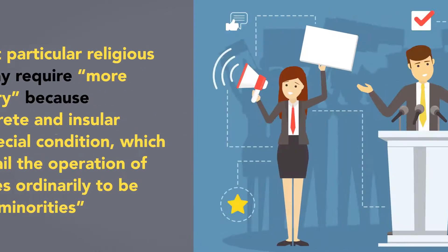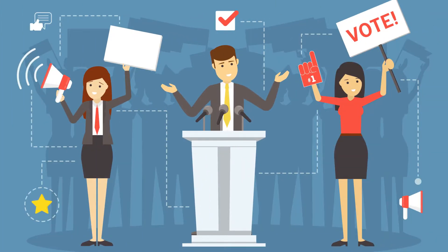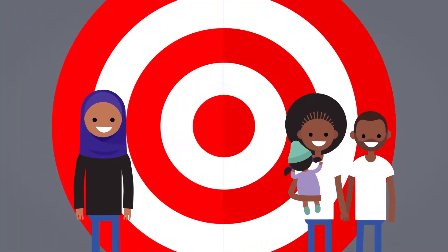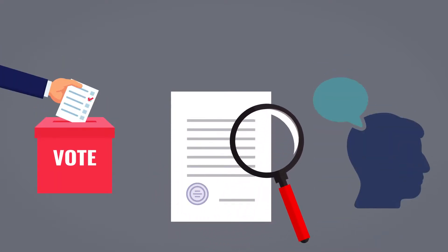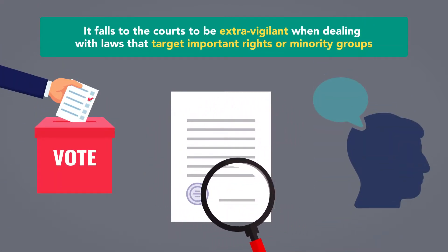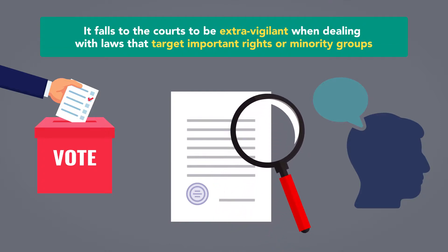In other words, the court said that normally we can rely on elections, politics, and constituencies to protect us from bad laws. But when discrete and insular minorities are targeted, they may not have the political clout to protect themselves from laws that discriminate against them. In addition, some laws may tend to curtail democratic processes, such as laws that restrict voting rights or other fundamental freedoms. As such, it falls to the courts to be extra vigilant when dealing with laws that target important rights or minority groups.